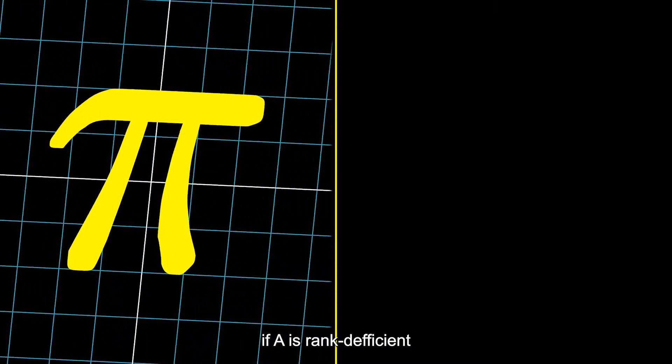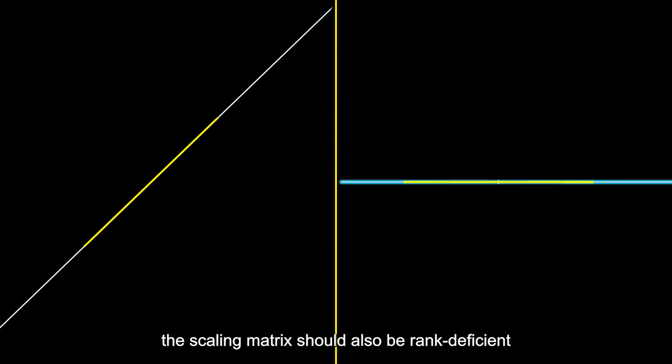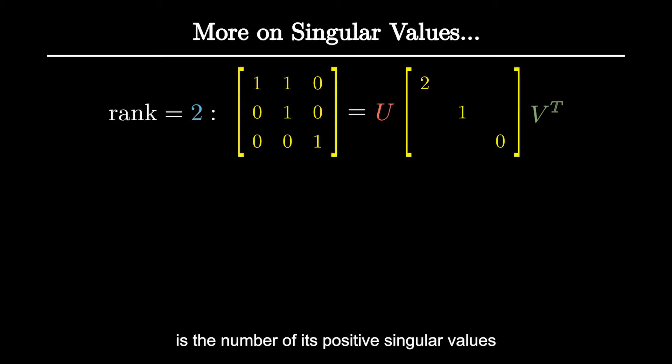If A is rank-deficient, then, not surprisingly, the scaling matrix should also be rank-deficient. Actually, we have a stronger result. The rank of a matrix is the number of its positive singular values.